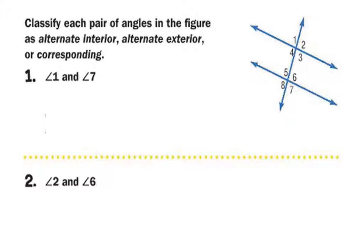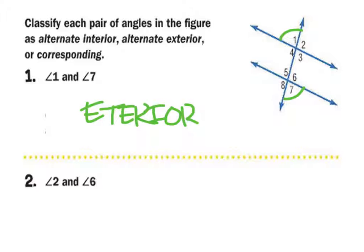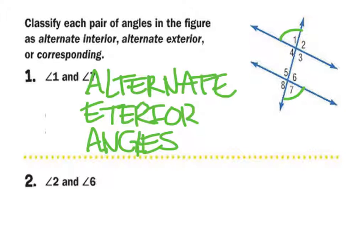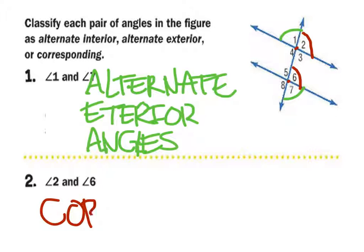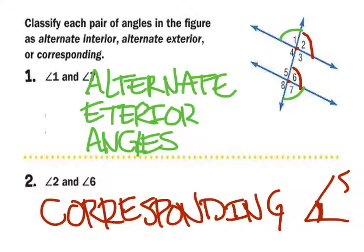Let's look at some angle classification examples. Angles 1 and 7 — notice both are on the exterior and they alternate (1 is on the left, 7 is on the right), so these are alternate exterior angles. Angles 2 and 6 — angle 2 is exterior and angle 6 is interior, so they're not both interior or both exterior. But angle 2 is in the top right of its intersection and angle 6 is in the top right of its intersection, so these are corresponding angles.